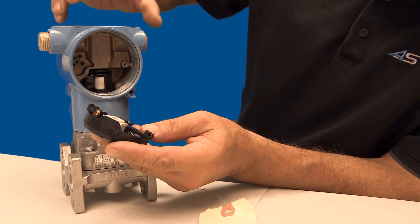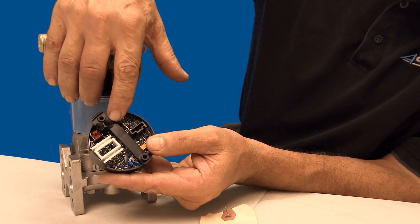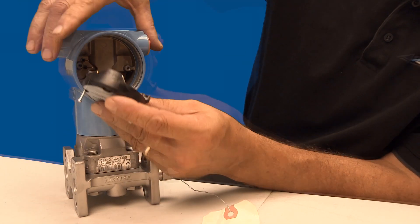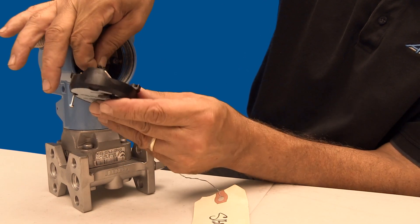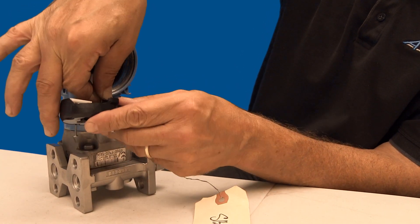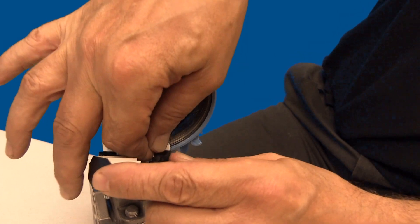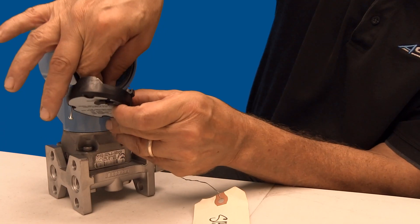First, you will want to replace the board by lining the two pins on the board to the two cone holes on the transmitter. You also need to attach the ribbon from the board to the sensor. Clip the ribbon by pushing it in until you hear it click, then give it a tug to make sure it doesn't come loose.